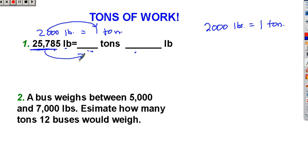I want to divide to get a smaller answer. So I'm going to take the number 25,785 and I'm going to divide it by my conversion rate. In this case, it's 2,000 because there are 2,000 pounds in a ton.